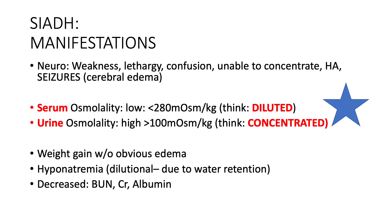Our patient with SIADH: too much ADH means too much water in the body, so we see signs of fluid overload. We don't necessarily see a lot of edema, but we will see hypervolemia and potentially signs of hypertension. Because there's too much water in the body, our blood work is diluted — we have a low serum sodium and low serum osmolality. Since all the water is staying in the body, urine output is concentrated and urine osmolality is high. We also see dilutional hyponatremia, weight gain, and diluted lab values including serum BUN, creatinine, albumin, and sodium — all starting to drop.